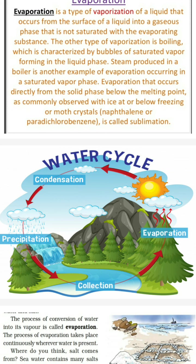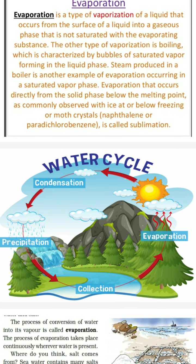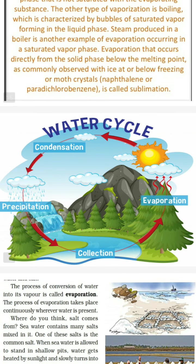Evaporation means water changes into water vapor, in the presence of sunlight. Then condensation means water vapors change into water. Jab condensation wali process hogi, to water vapors water mein change hongi, to aapka precipitation hogi. Precipitation means it is raining. The water returns in the same amount, and again evaporation, condensation, and precipitation — this is a reversible, continuous process. That is why it is called the water cycle.